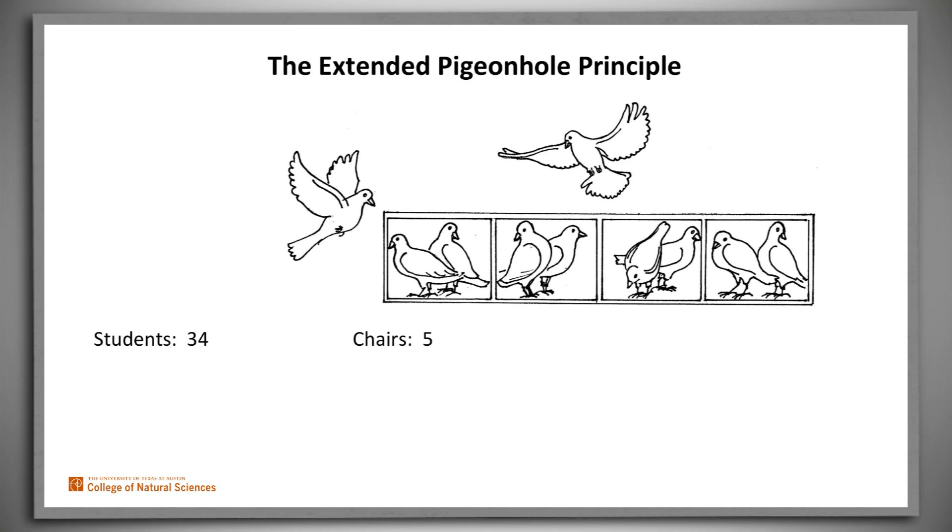So for example, suppose there are 34 students in 5 chairs. Then at least, take 34, divide by 5, take the ceiling of that, and you get 7. There are at least 7 students in at least 1 chair.